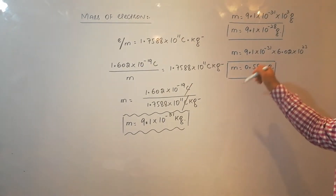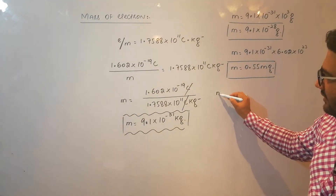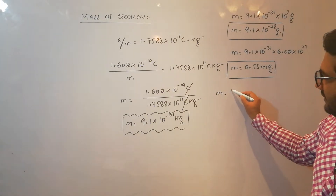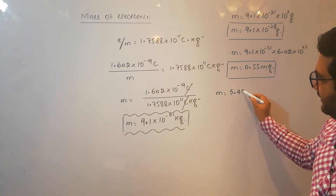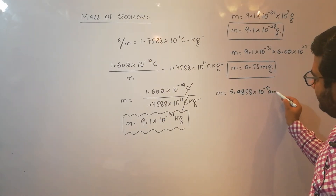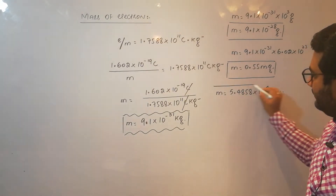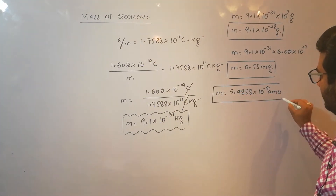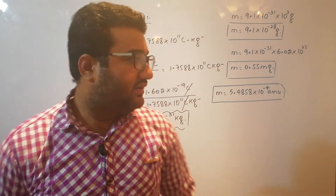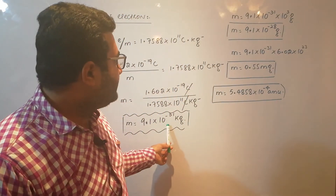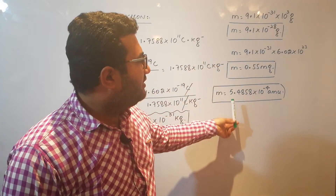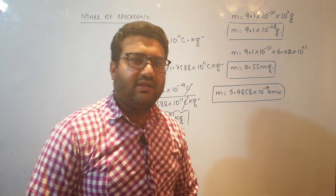The mass of electron in amu is 5.48 × 10⁻⁴ amu. So there are four values of mass that you must keep in mind: the value in kg, the value in grams, the mass of 1 mole of electron, and the mass of electron in amu.